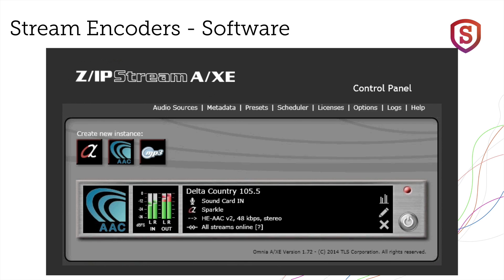There's also a metadata input over Ethernet. A selection of predefined metadata filters is included, and you can easily define your own metadata parsing filter, or have Telos support make one from a data sample. This takes audio title and artist data from your automation system and formats it correctly — no spaces or upper-lower mixed case issues — whatever you want. It makes it look great on the screen for people listening to your stream.